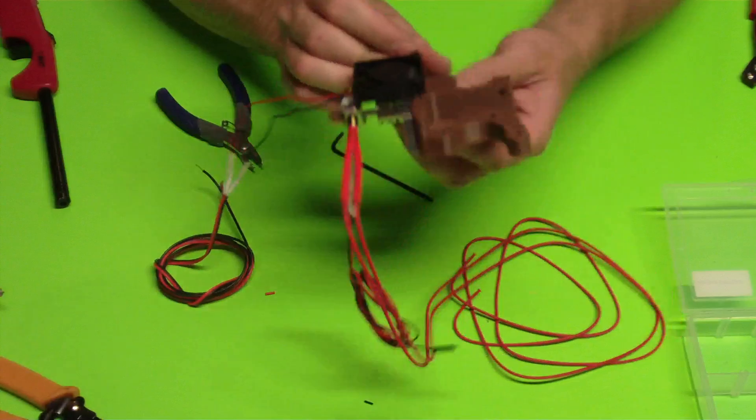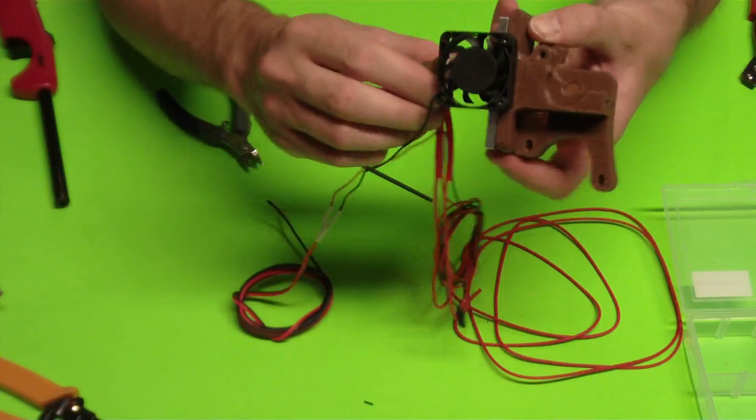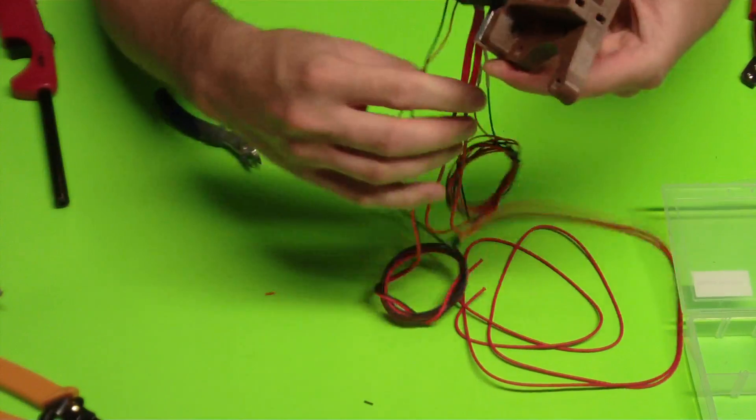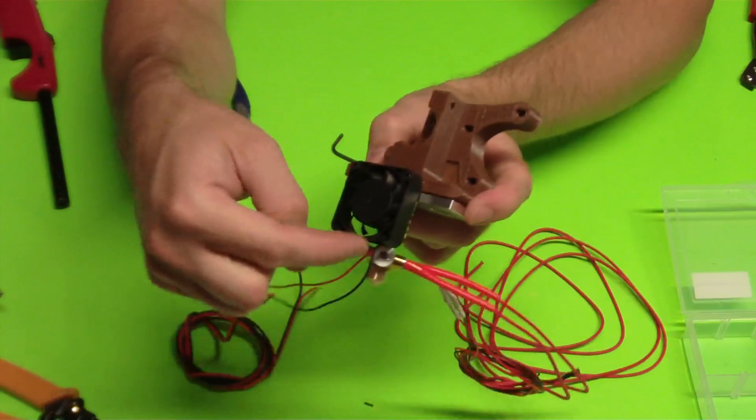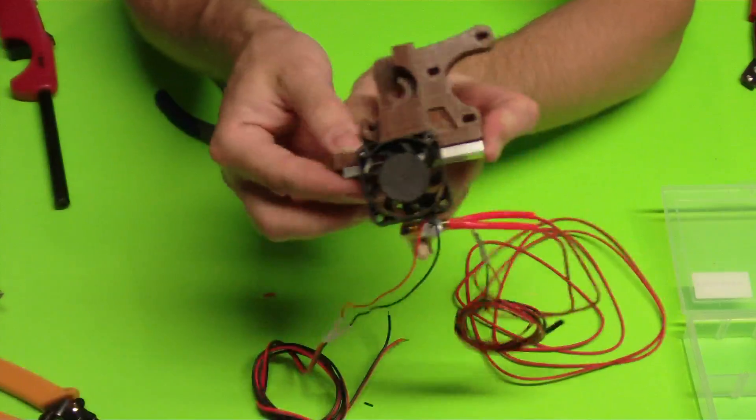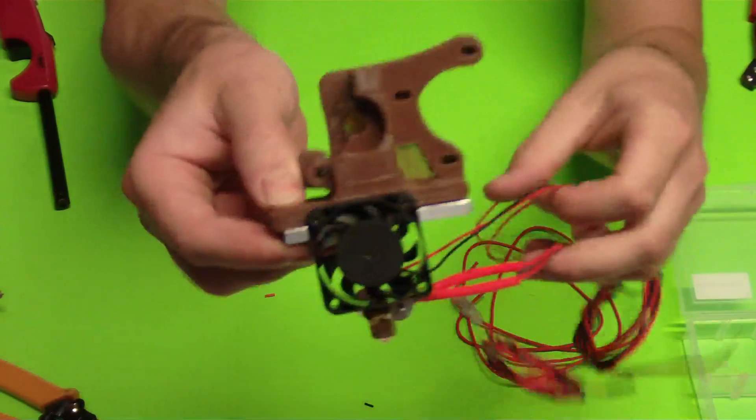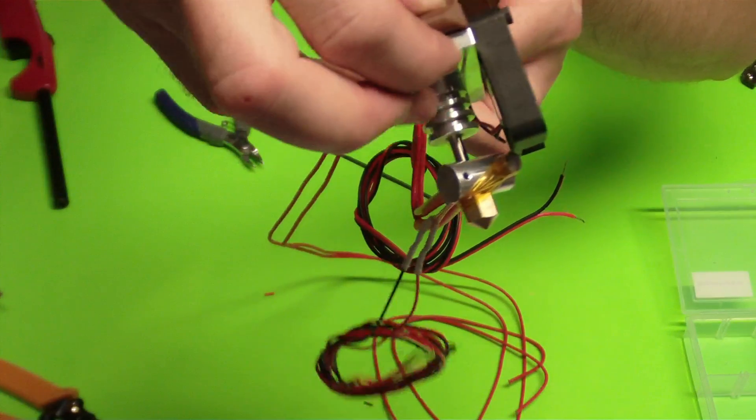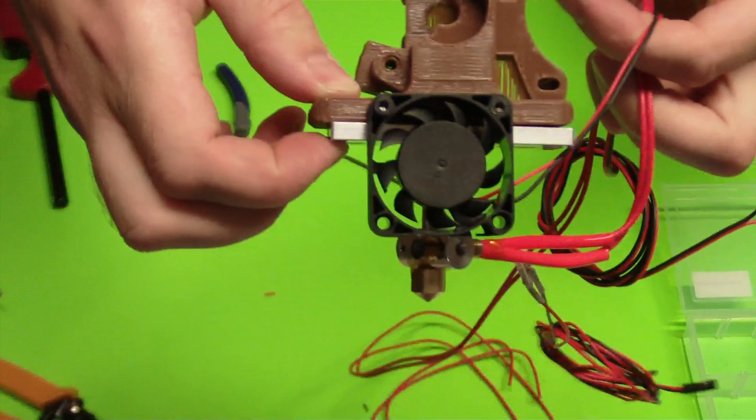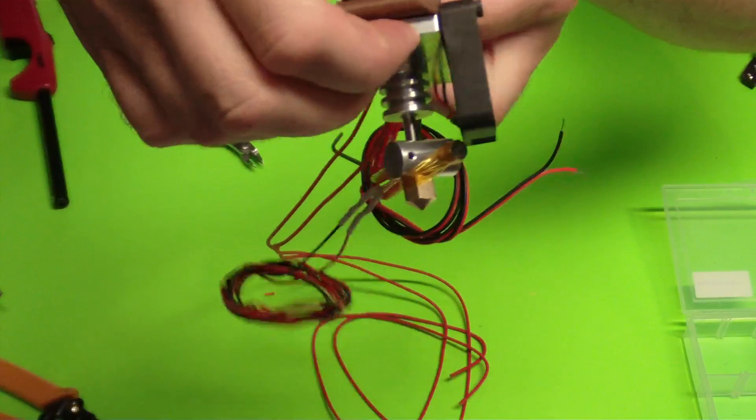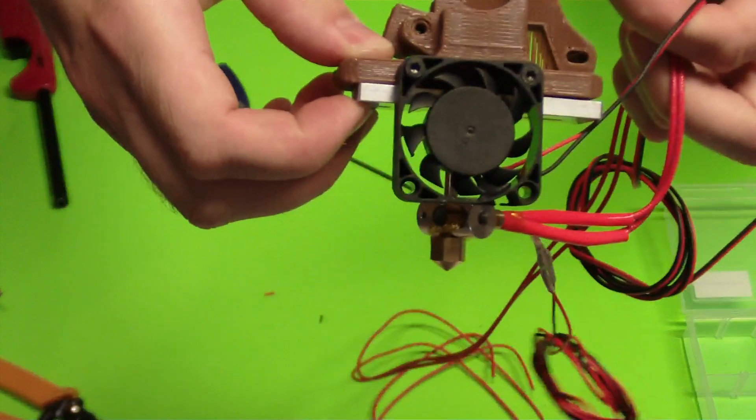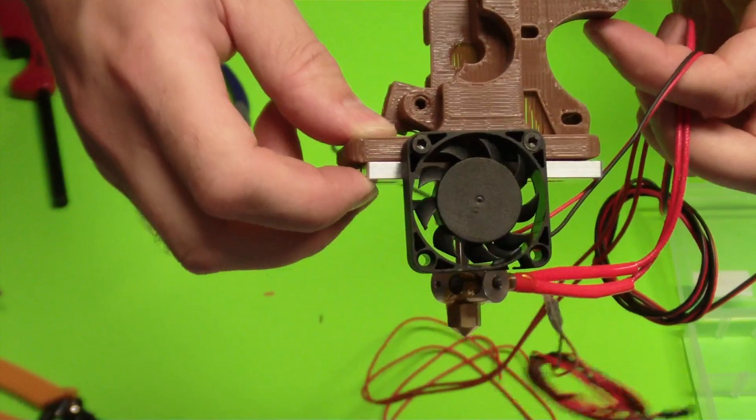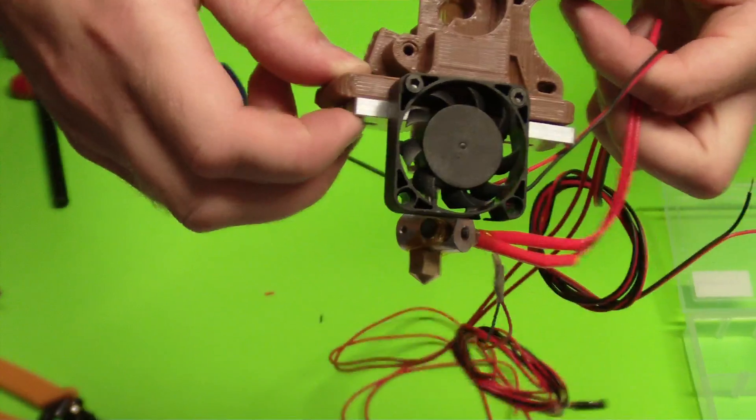So you can see you probably should have the fan wires exiting this side here. But then basically all the fan is doing is it's blowing or sucking air directly off of this block right here. And you can make some fancy ones that you can print out and do that. But just to get you guys up and printing, this is the quickest, easiest, and most reliable way of doing that.